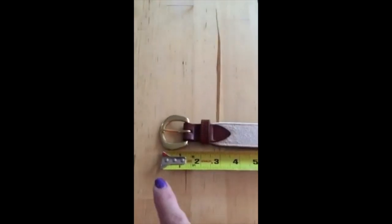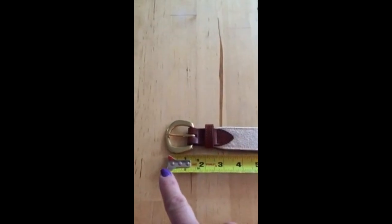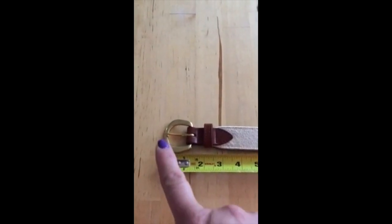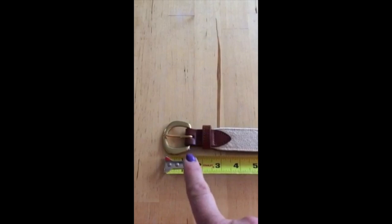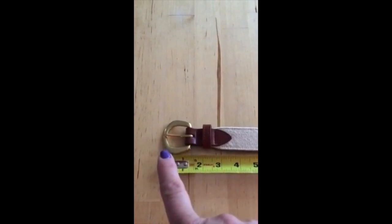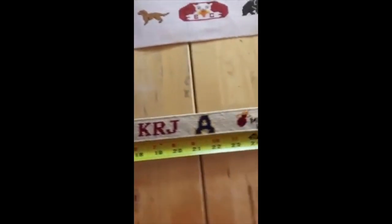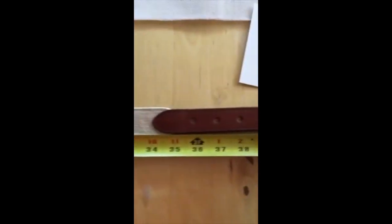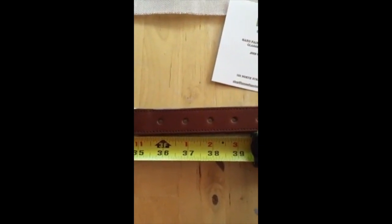And we're going to measure that belt from the tip of the buckle, the farthest point out, not where the leather meets the buckle, but the farthest point out. And we're going to measure all the way over to the hole that the person uses the most.